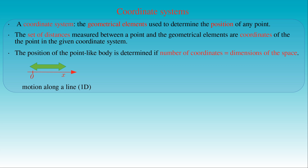In the case of planar motion we need to use a two-dimensional coordinate system. For circular motion we can attach a polar coordinate system to the center O of the circle, which we consider as the reference point. The position of a body moving along the circle is then determined by two polar coordinates: the first is the distance from point O, that is the radius R of the circular path; the second is the angle phi measured between the position of the body on the circle and an arbitrary axis through the center O. The value of an angle can be determined by measuring arc lengths along a circle with unit radius, so we can always speak of distance measurements in a general sense.